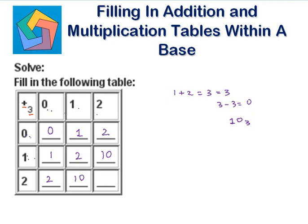2 plus 2 is 4. 4 minus 3 is 1, so this is 1 and the carryover is 1 — that's 11 to the base 3. This is how we complete the addition table.